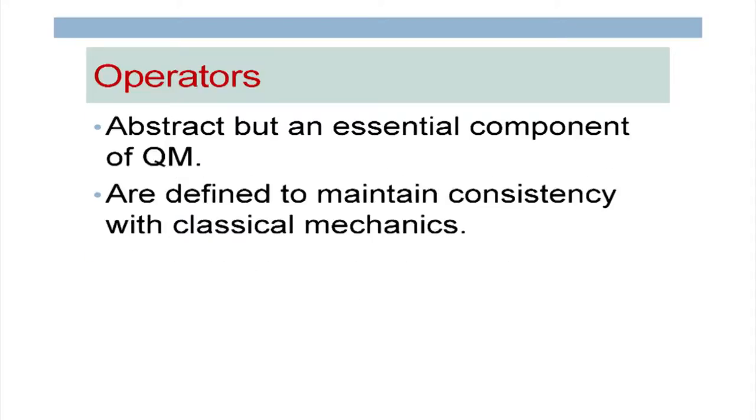Now let us discuss a fairly abstract quantity called operators. When I teach this course to first-year students, I always warn them that quantum mechanics is much more abstract than relativity. In relativity, the arguments are very clear and concise — they may shock you, but they are clear-cut. In quantum mechanics, sometimes you lose track of arguments and talk of really abstract things which do not seem to have any bearing with real space.